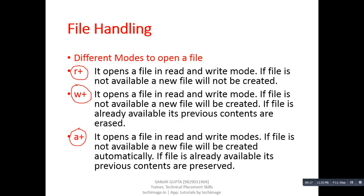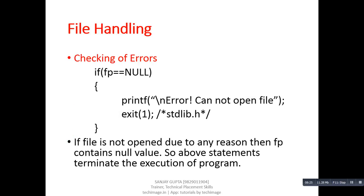Moving further, another step is checking for errors. After opening a file using fopen, we can receive two types of values: NULL or the address of a particular file. If fp contains NULL, it means the file was not opened successfully. We can check this situation using an if condition: if fp == NULL, the printf statement prints 'Error: cannot open file' on the console. If the file is not opened, we use the exit statement to terminate execution of the program. The exit statement is declared in stdlib.h.